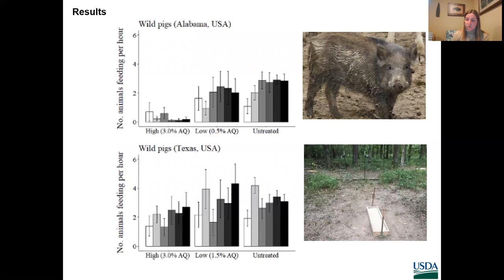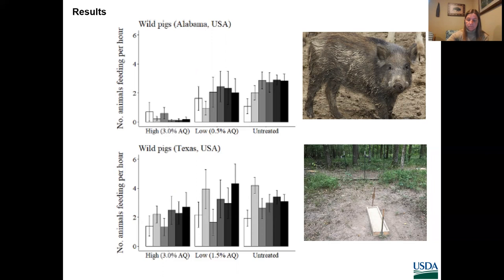This next series of slides shows the numbers of animals feeding per hour recorded for wild pigs, raccoons, and deer — both white-tailed deer and mule deer — for each treatment. These species represented 98.1% of the images with animals feeding in Alabama, and 90.9% of the images of animals feeding in Texas. In Alabama, the rate of wild pigs feeding on high-treated corn was lower during the latter nights of the study. The rate of feeding on high-treated corn was lower than untreated corn, but there was no difference in the rate of wild pigs feeding on low and untreated corn in either state.